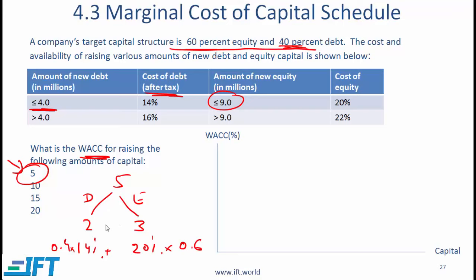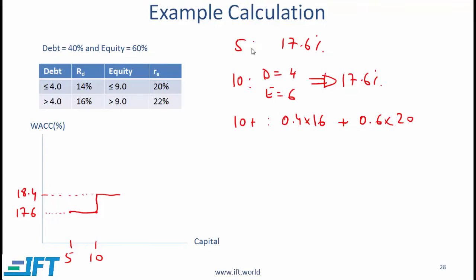Use the same method to calculate WACC for raising $10 million, $15 million, and $20 million, and fill out the picture showing WACC for each amount. When you raise $5 million, the WACC based on those calculations equals 17.6%.